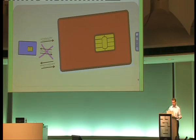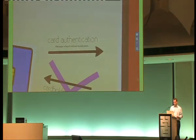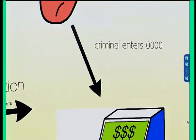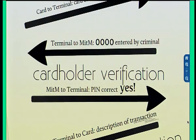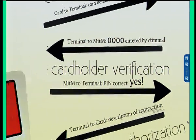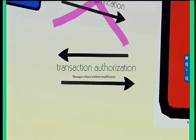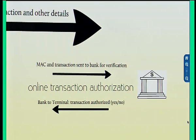There's a malicious card, shown in red, which is able to talk to the real card. The first stage of the transaction is card authentication — here we relay messages between the real card and the terminal without modifying them, so the digital signatures still work. The criminal then enters 0000, or anything — it doesn't really matter. The terminal sends that PIN to the man-in-the-middle device, which sends back the answer 'yes' — it will always answer yes. We never send that PIN to the real card. Transaction authorization then continues as normal; we don't modify any messages, so the message authentication codes remain valid. When the MAC is sent to the bank, they say yes — they can't tell what's been going on.